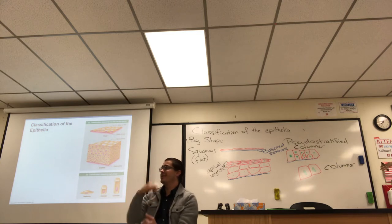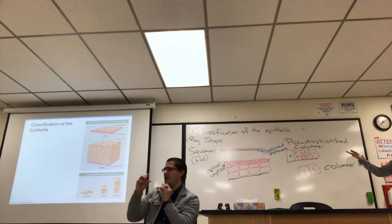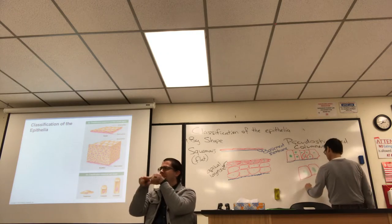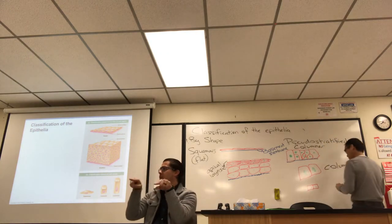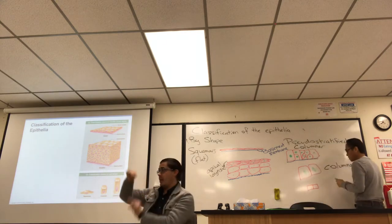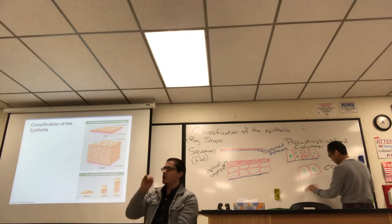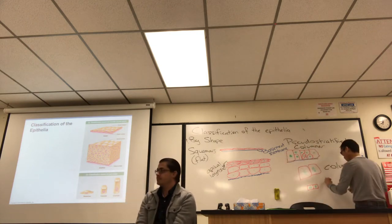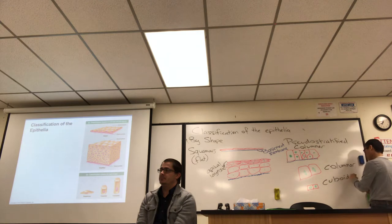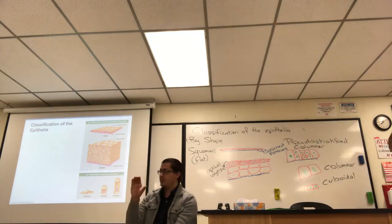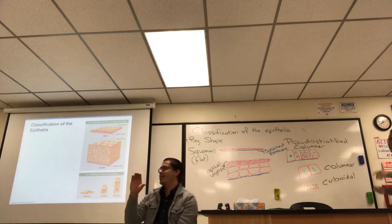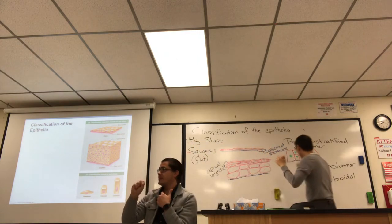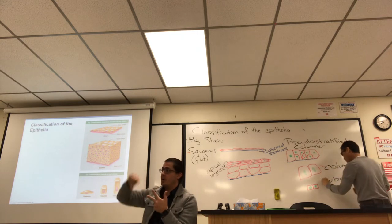There is also a shape in between a column and a flat cell — more cube-shaped, called cuboidal. Columnar cells have cigar-shaped nuclei, while cuboidal cells have large round nuclei. So in terms of shape, we have: flat (squamous), columnar, and cuboidal — those are three of the four types.